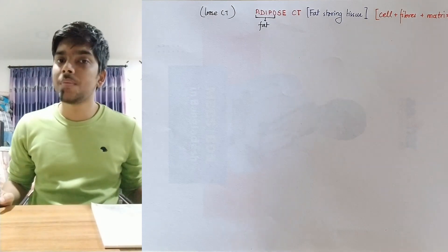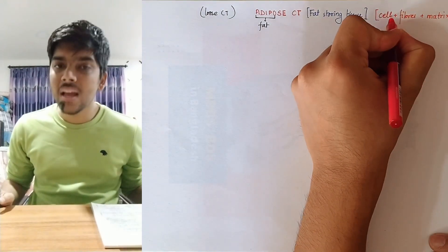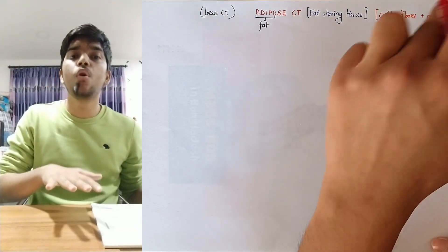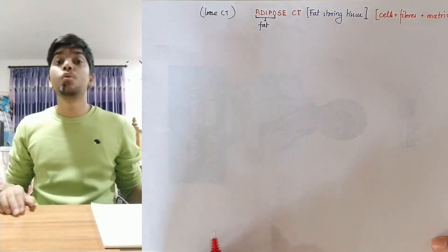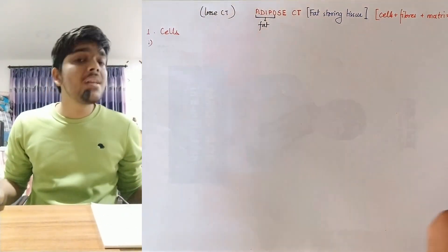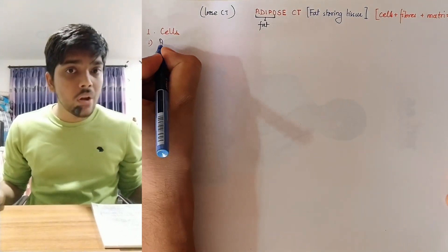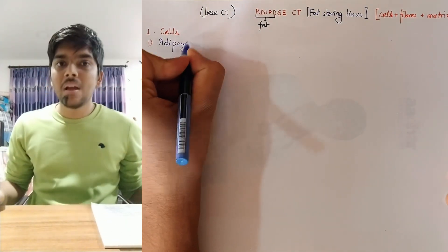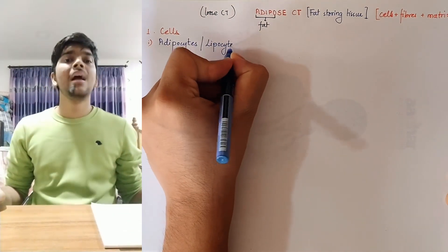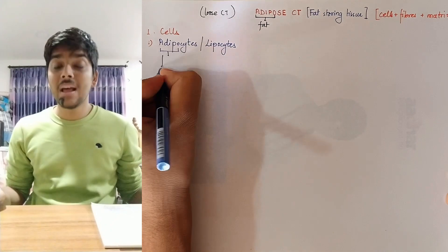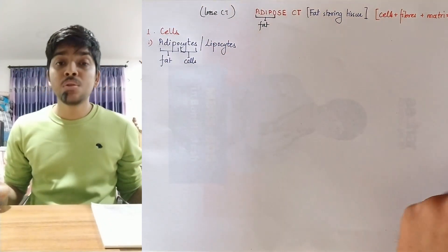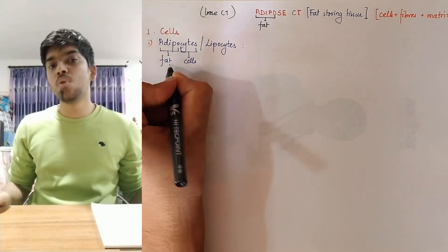What are those typical features? The presence of cells, fibers, and ground. The cells and fibers are present on the ground or matrix. So what are the cells present in adipose connective tissue? There are two types of cells. Number one: adipocytes or lipocytes, where adipo or lipo means fat and cyte means cell.